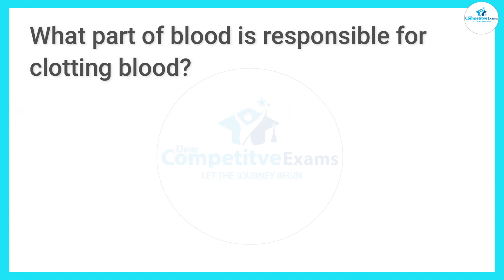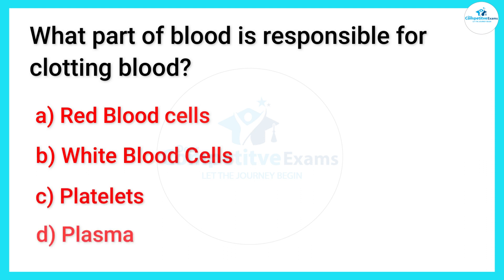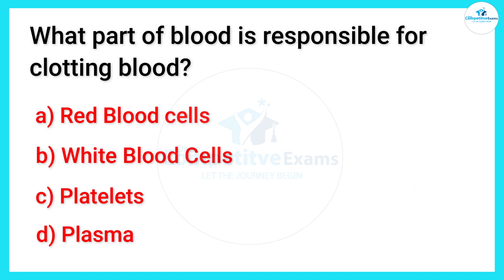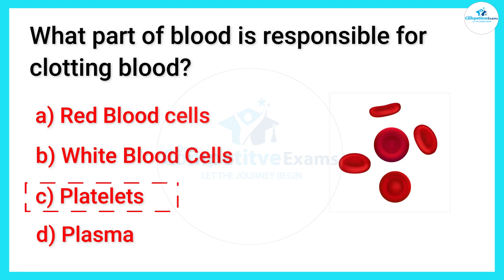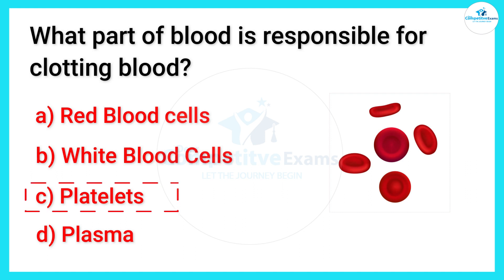What part of blood is responsible for clotting the blood? Red blood cells, white blood cells, platelets, or plasma? The answer is platelets. Friends, platelets — a type of blood cell — and proteins in your plasma work together to stop bleeding by forming a clot over the injury.